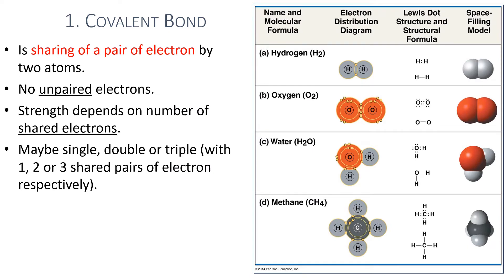The first type of chemical bond is covalent bond. Covalent bond involves sharing of a pair of electrons by two atoms within a molecule, resulting in no unpaired electrons. The strength depends on the number of shared electrons, resulting in single, double, or triple covalent bonds formed between atoms within the molecule.